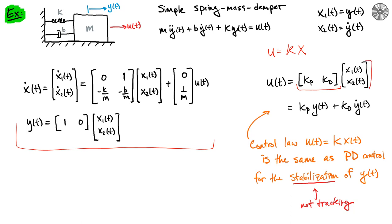And so if you remember the way that we defined our states in this case was that the first state is just the displacement y and the second state is the velocity y dot. And so if we multiply these two matrices out then we just get Kp times y plus Kd times y dot.